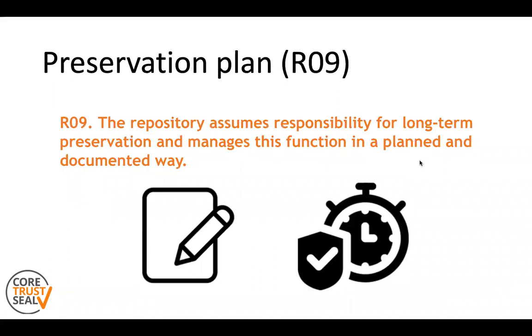Requirement number 9 is about the preservation plan, which is a very essential part of becoming a certified CoreTrustSeal repository. This means that the repository assumes responsibility for long-term preservation and manages this function in a planned and documented way.